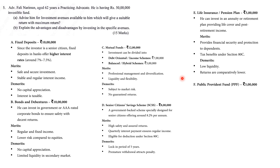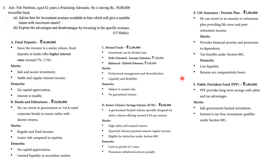Public Provident Fund — 5 lakhs: Provides long-term savings, safety, and tax advantages. Merits: safe government-backed investment, interest is tax-free, investment qualifies for Section 80C deduction, and useful as a retirement corpus. These are all six investment avenues with their meanings, merits, and demerits.